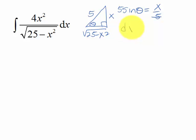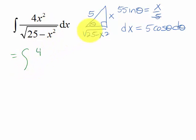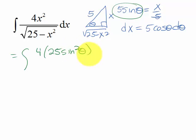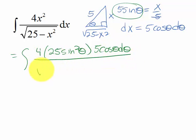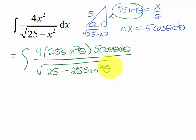That means dx is going to be 5 cosine theta d theta. Now let's do the substitution. This becomes the integral of 4 times x squared — since x was 5 sine theta, that's 25 sine squared theta — times dx which is 5 cosine theta d theta, all over the square root of 25 minus 25 sine squared theta.